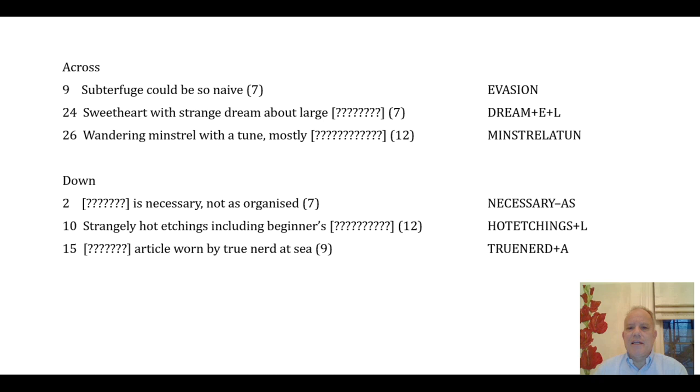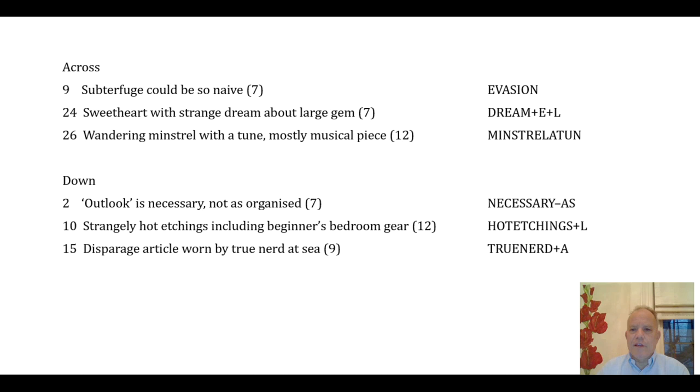And I'll be next revealing something more about them. We'll give you - here we are - the definitions. So we have 'a gem' at 24, 'a musical piece' at 26, 'outlook' in inverted commas at 2 down, 'bedroom gear' at 10 down, and 'disparage' at 15 down. So only that last one is a verb.